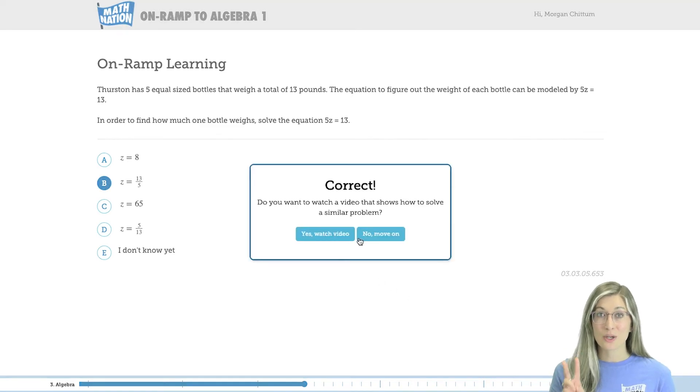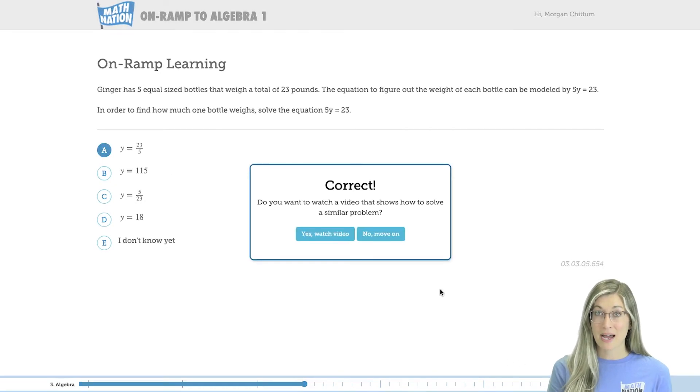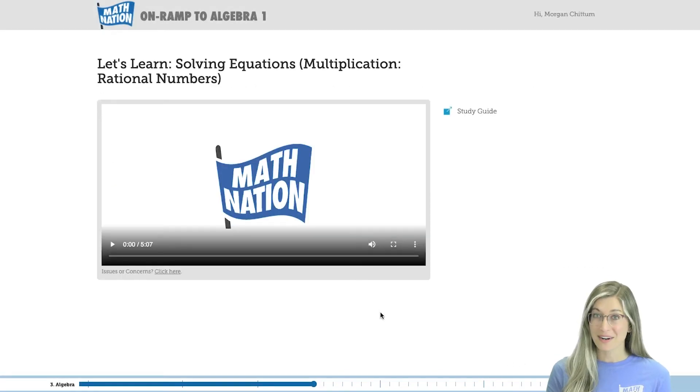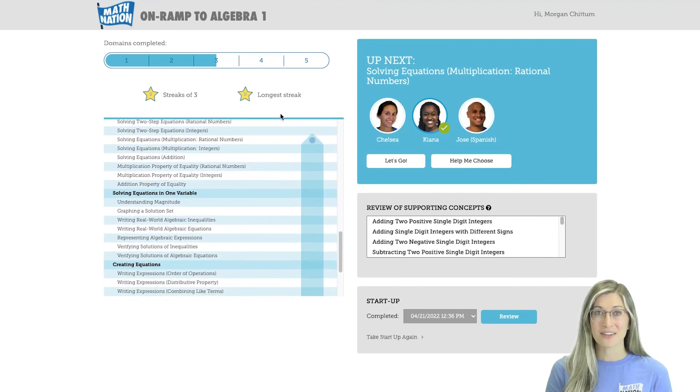Students need to get two questions right in a row to move on to the next topic in their learning pathway. If students are struggling to master a specific topic, no worries, because the on-ramp tool will adjust and adapt to help them reach mastery. Students continue working through each topic in this manner until they have completed their entire personalized learning path.